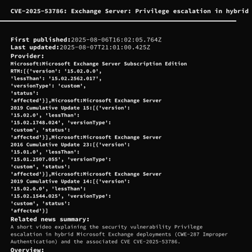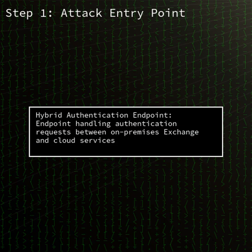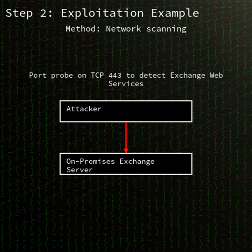In today's episode, we cover CVE 2025-53786, a high-severity vulnerability in Microsoft Exchange server hybrid deployments that can lead to privilege escalation. Disclosed in August 2025, this issue stems from guidance and configuration steps introduced in April 2025. Both Microsoft and CISA have issued alerts and directives urging organizations, especially federal civilian agencies, to apply the April 2025 hotfix and implement updated security configurations to close this gap.